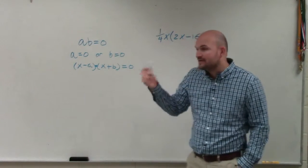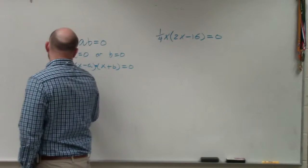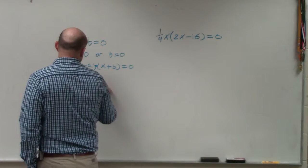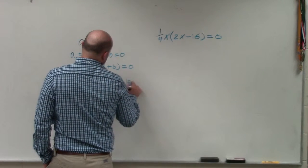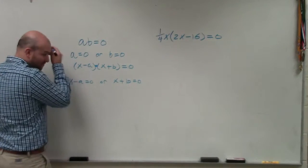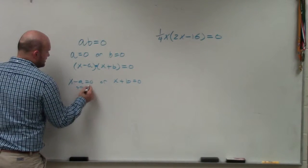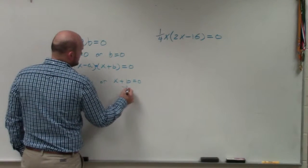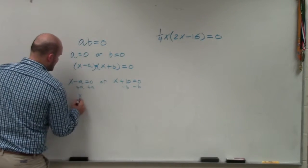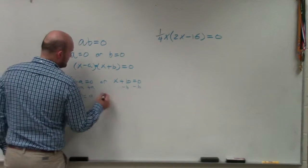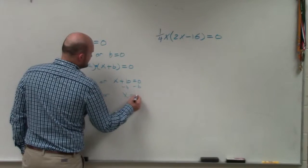So we need to find the values for a and b that are going to make them zero. So we'd say x minus a equals zero or x plus b equals zero. And if we are solving for x, which will make them zero, then we could just solve for x. So we'd say x is equal to a or x is equal to negative b.